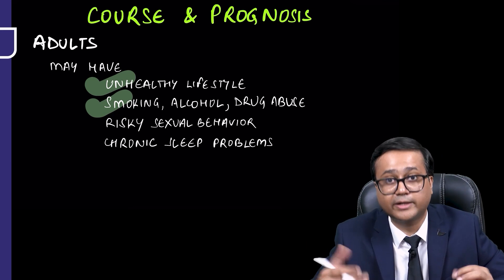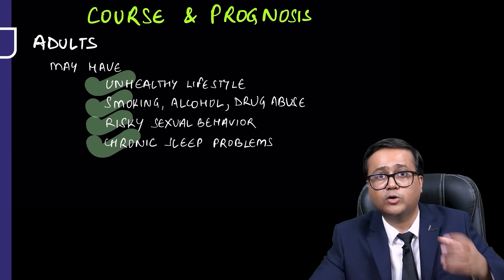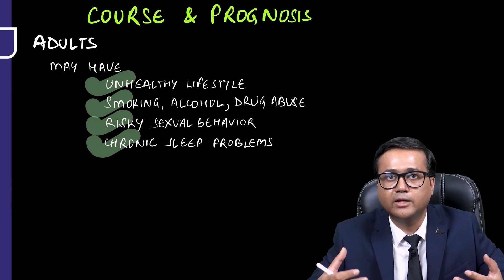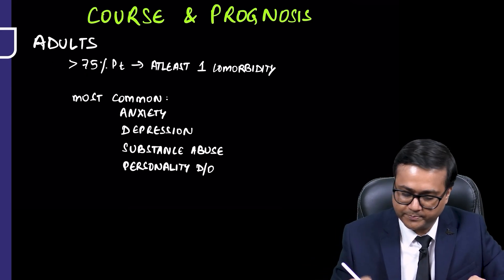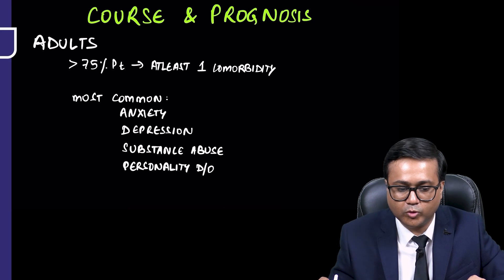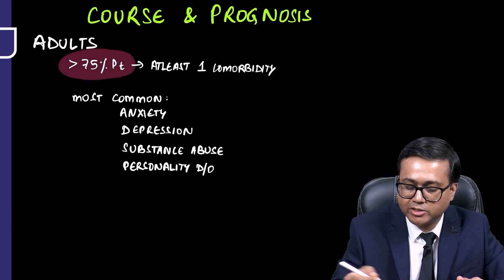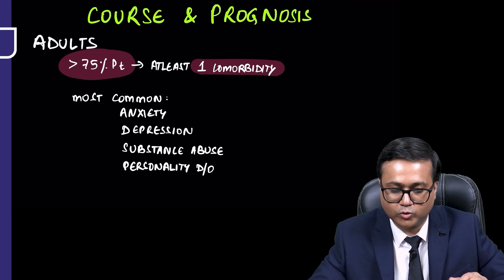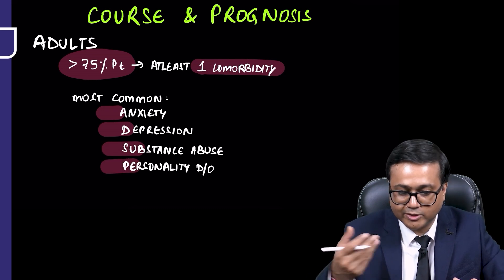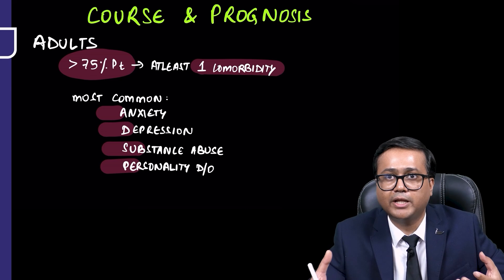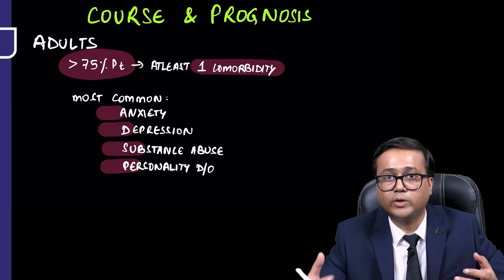Adults with ADHD may also have an unhealthy lifestyle, including smoking, alcohol use, drug abuse, risky sexual behaviors, and chronic sleep problems. One should take a detailed history of all these areas for a holistic management approach. Comorbidity is actually a rule in adults with ADHD — more than 75 percent may have at least one comorbidity, including anxiety, depression, substance abuse, personality disorders, or gambling and other addictions.